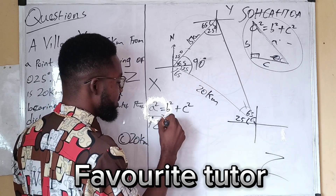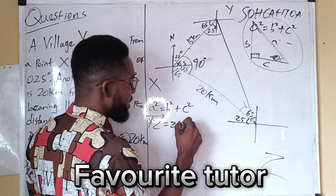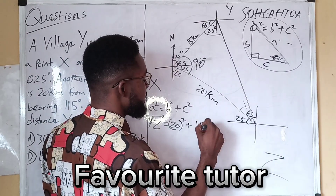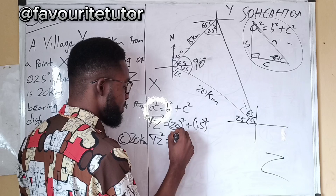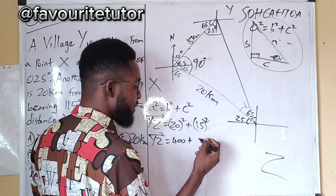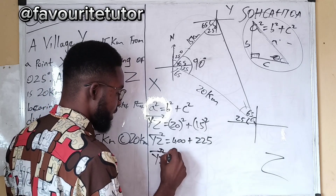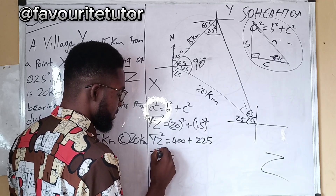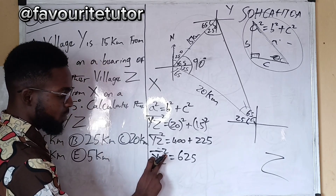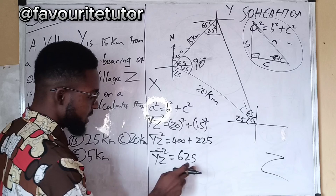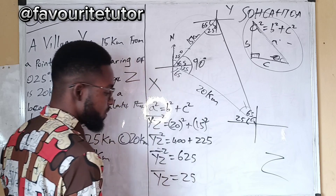YZ raised to the power of 2 equals b² + c². Let b = 20 and c = 15. So YZ² = 20² + 15² = 400 + 225 = 625. Taking the square root of 625, line YZ equals 25 kilometers.